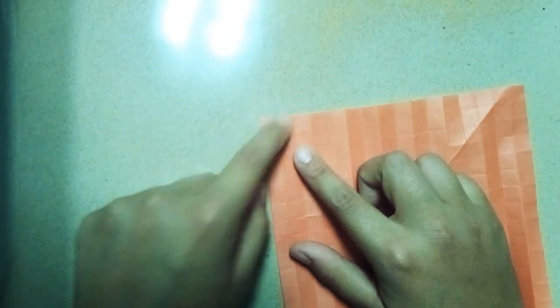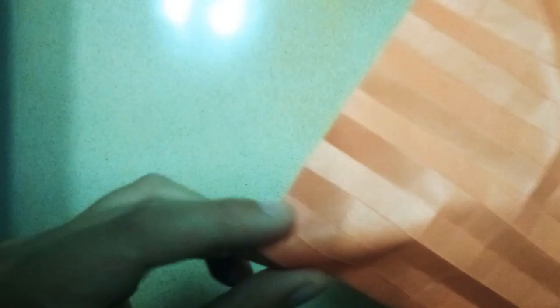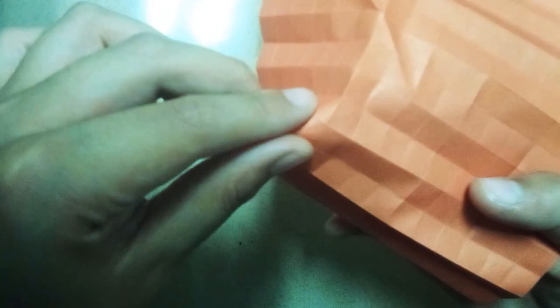We're going to repeat that on all the other sides. So go one square down from this edge. Rotate it diagonally. And now pinch 1, 2, 3, 4, 5, 6, 7, 8 squares across. Rotate. Go one square down. 1, 2, 3, 4, 5, 6, 7, 8.